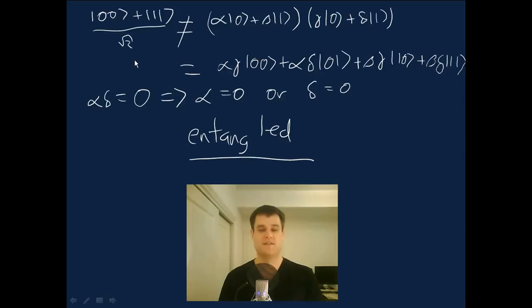And so the Bell state is just one of, as we'll see, many. And these entangled quantum states really are different than classical states, and it turns out that they're essential in the workings of quantum computers.